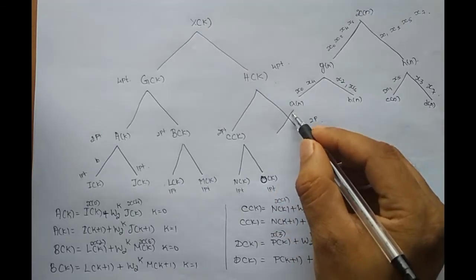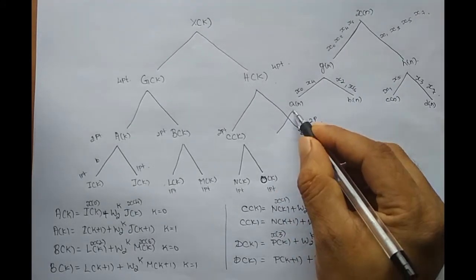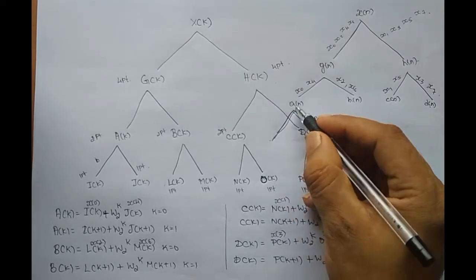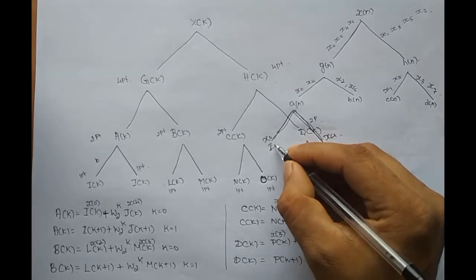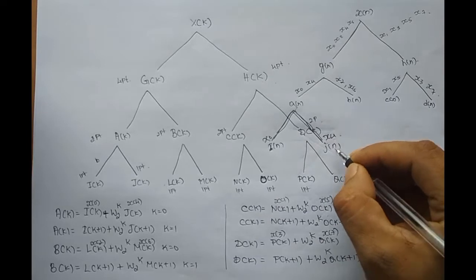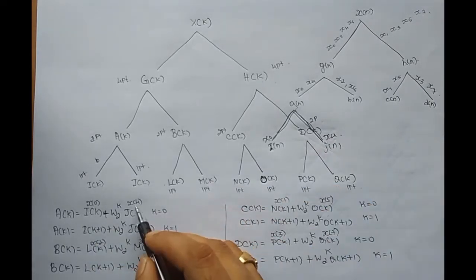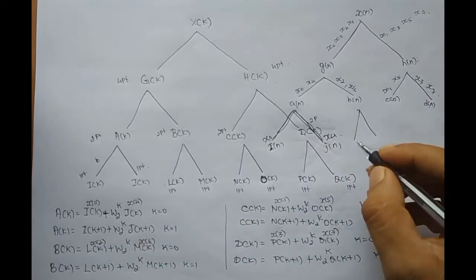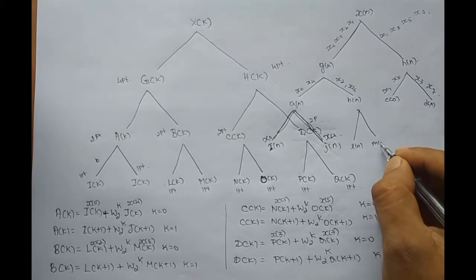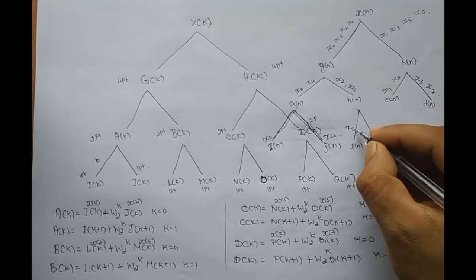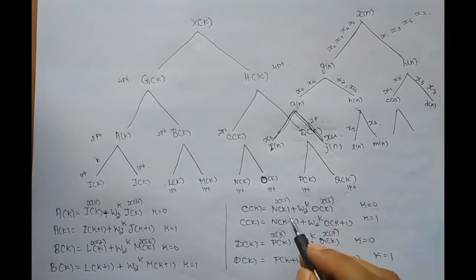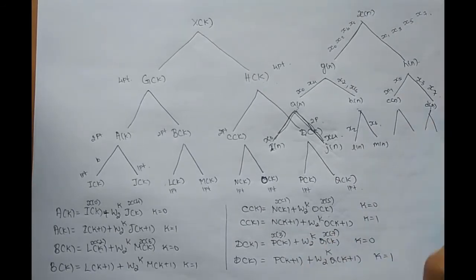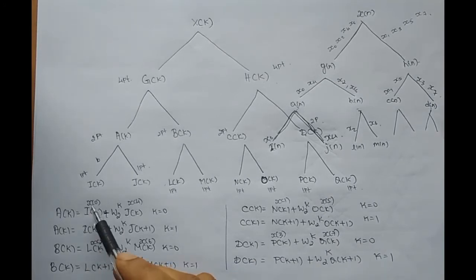And now in the final stage, a of n is decomposed into 2 1-point DFTs. This corresponds to x of 0 and this corresponds to x of 4. And these are i of n and j of n. So i of n corresponds to x of 0, j of n corresponds to x of 4. l of n corresponds to x of 2 and m of n corresponds to x of 6. Similarly, these two are x of 1 and x of 5, and these two are x of 3 and x of 7. This is how we wrote the corresponding samples in the time domain.